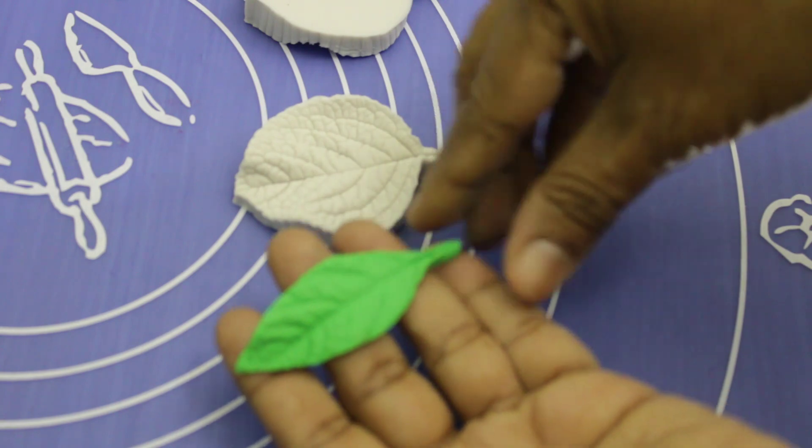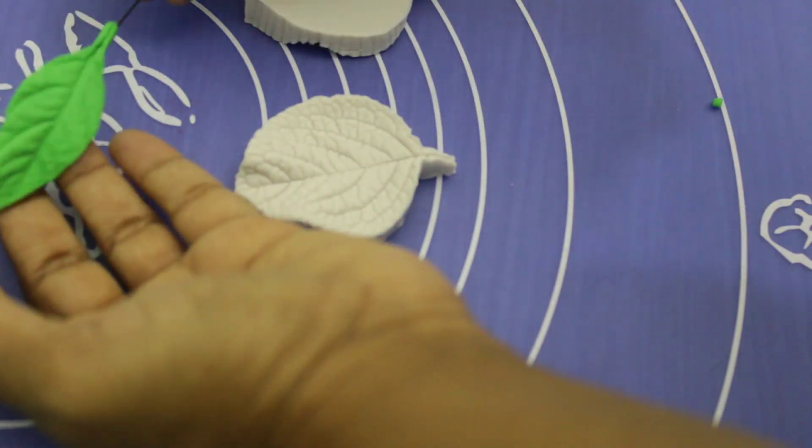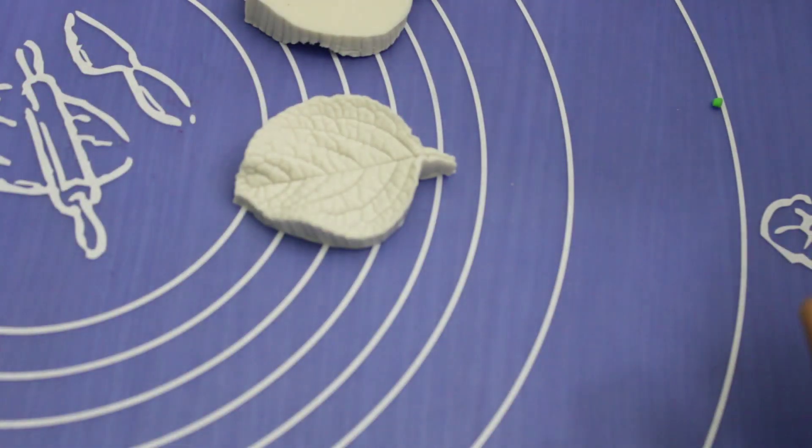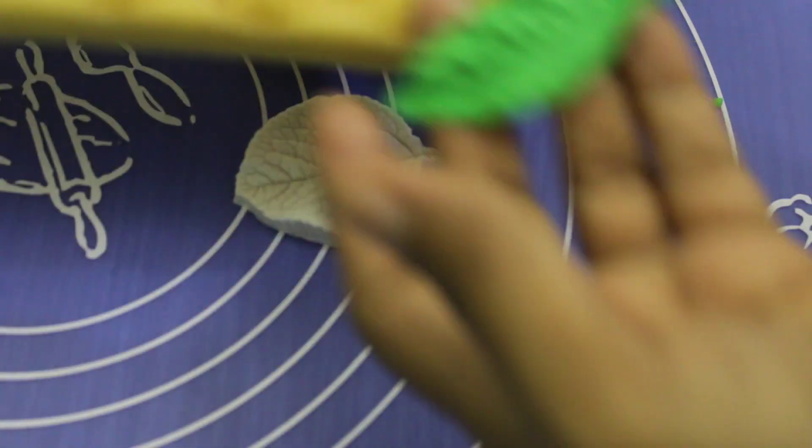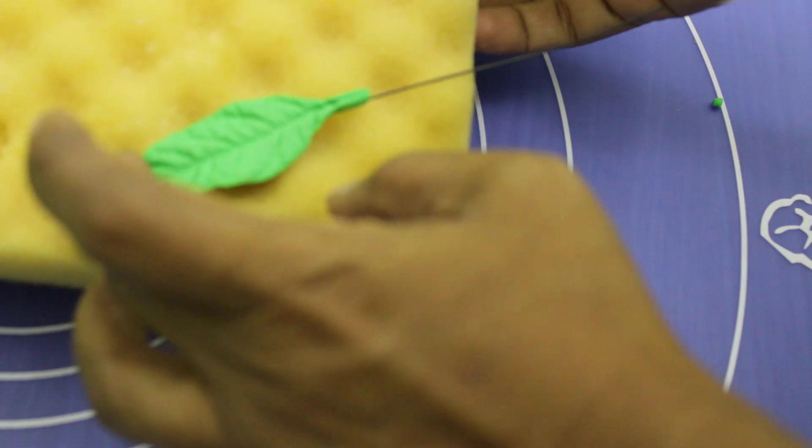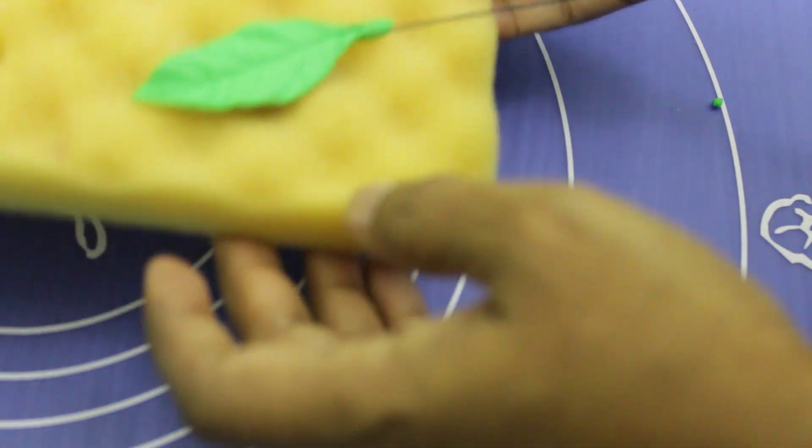And now I am going to press it. You see the beautiful leaf? So I press it a little bit this side. Keep it aside to dry. I am using this foam, put the leaves so it will be dry.